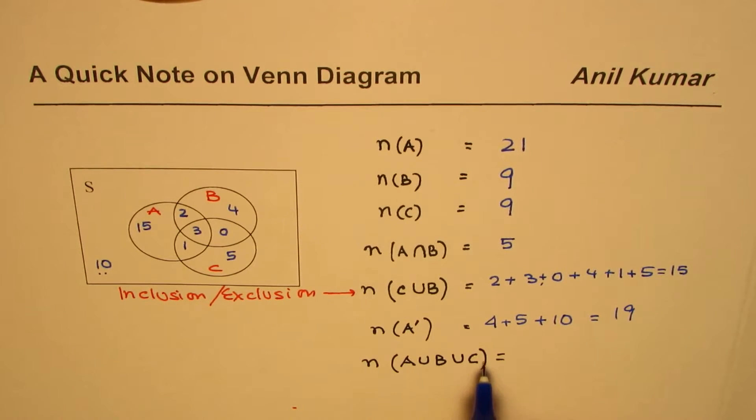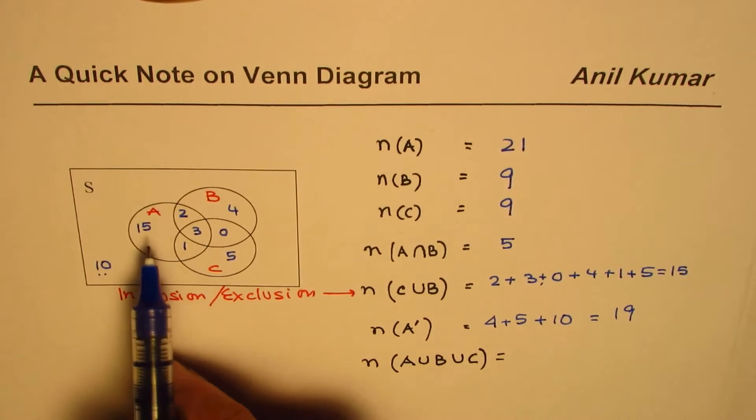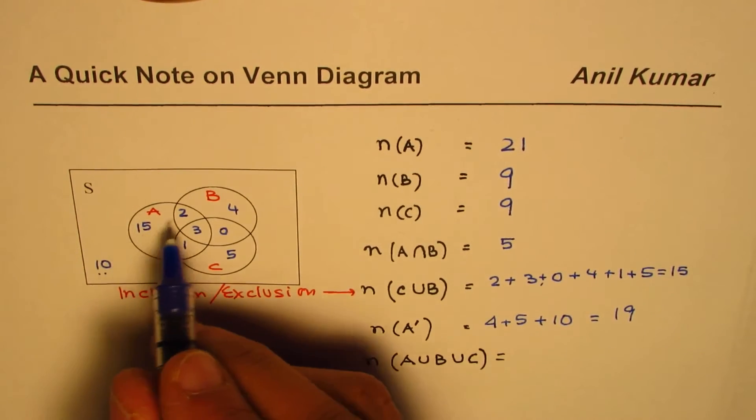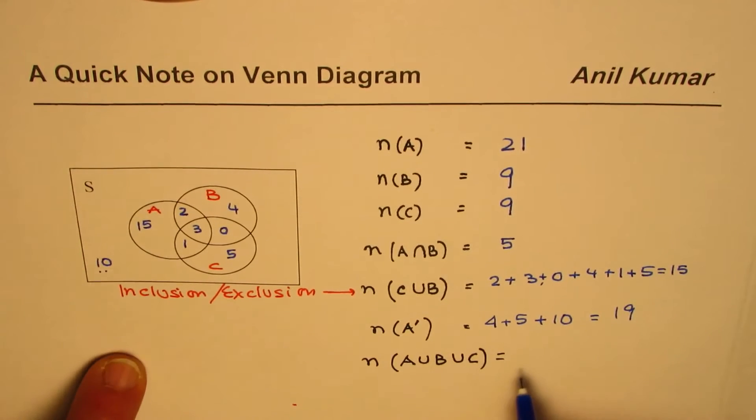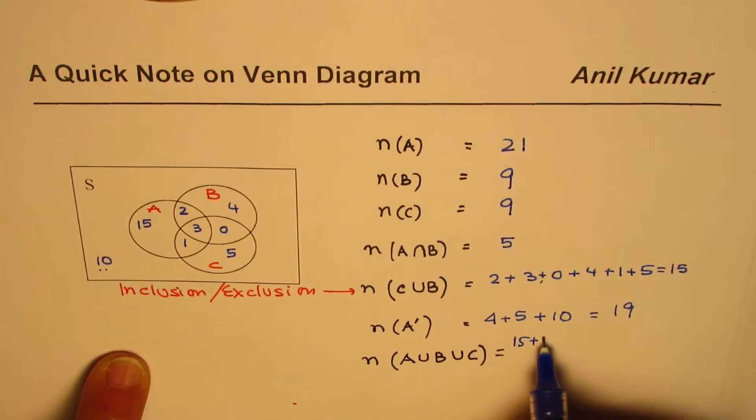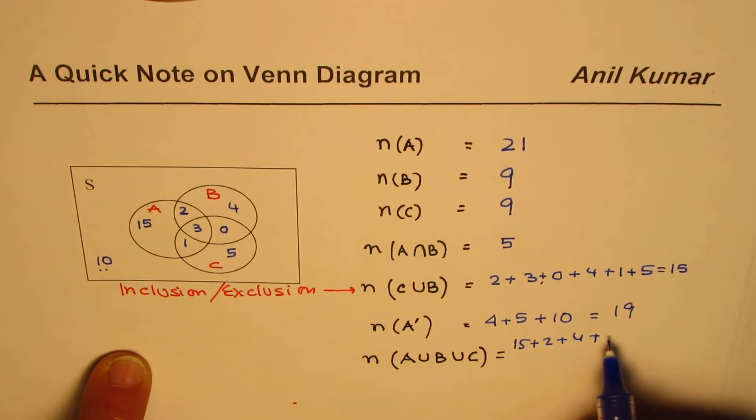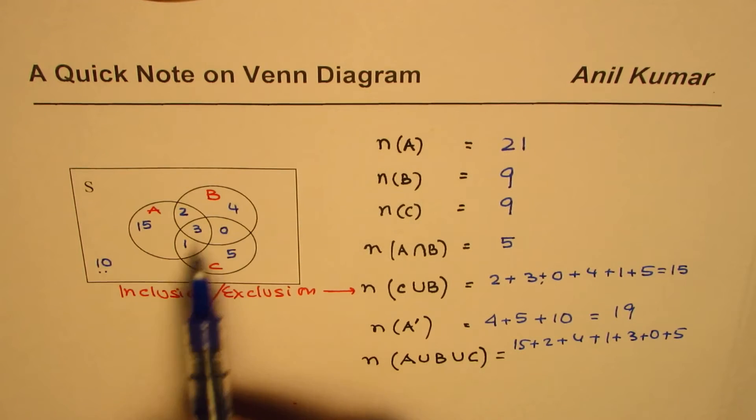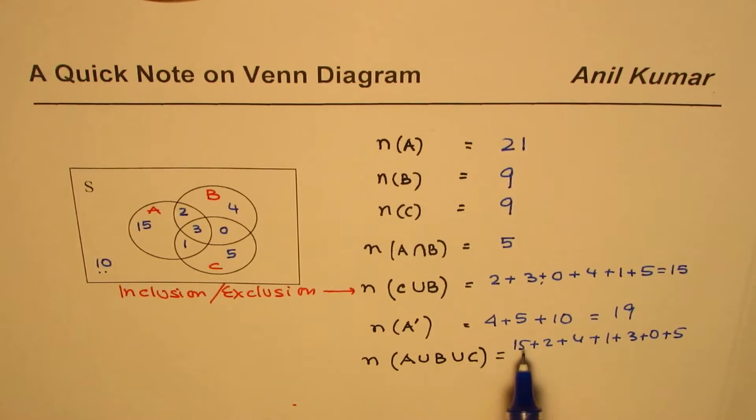Now it says number of elements in union of this, so which is you have to add all of them together. So you add all of them together. What you get is 15 plus 2 plus 2 plus 4 plus 1 plus 3, let me write 0 also, plus 5. So let's add this up.